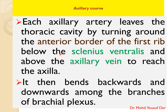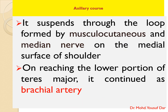Each axillary artery leaves the thoracic cavity by turning around the anterior border of the first rib, below the scalenius ventralis and above the axillary vein, to reach the axilla. It then bends backwards and downwards among the branches of the brachial plexus, passing through a loop formed by the musculocutaneous nerve and median nerve on the medial surface of the shoulder.